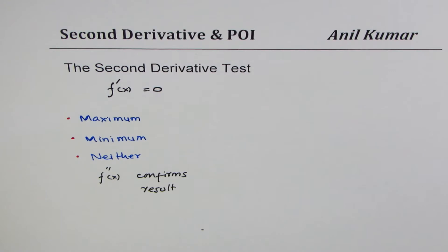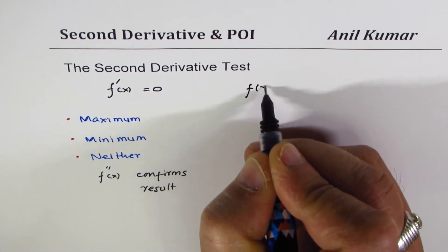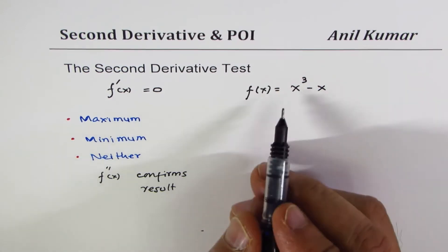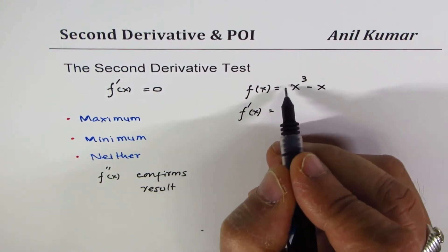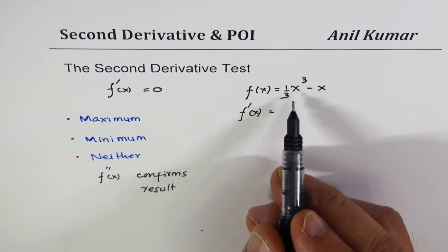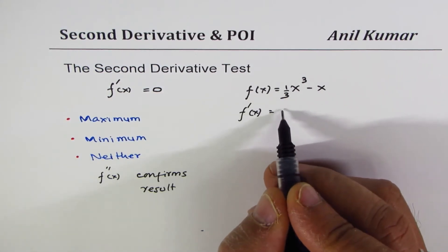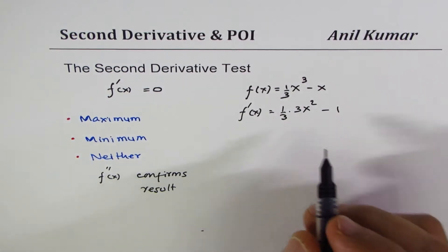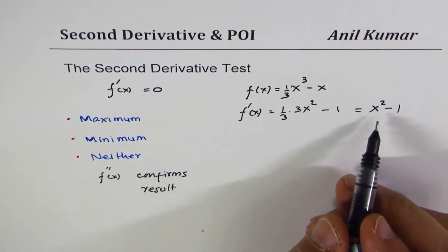Let's take an example. Let's use the function f(x) = (1/3)x³ - x. I added the 1/3 to avoid fractions in the derivative. Taking the first derivative: the derivative of (1/3)x³ is (1/3)·3x² = x², and the derivative of x is 1, so the first derivative is x² - 1.